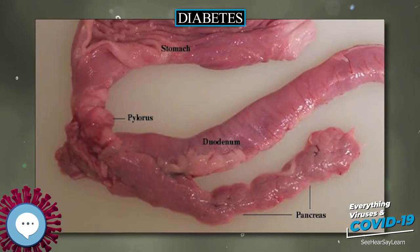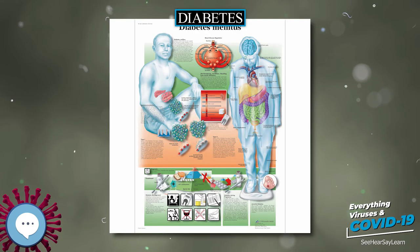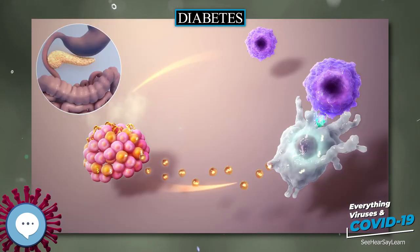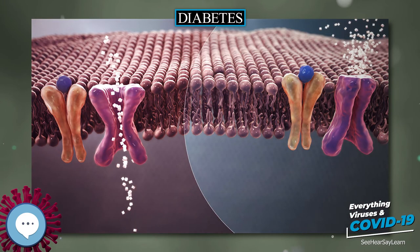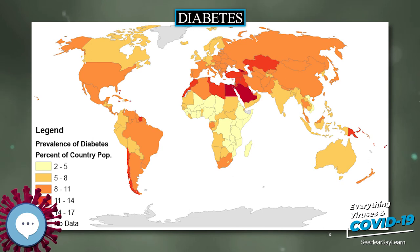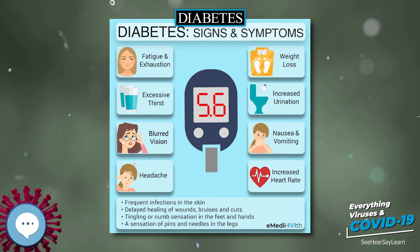No single dietary pattern is best for all people with diabetes. Healthy dietary patterns, such as the Mediterranean diet, low-carbohydrate diet, or DASH diet are often recommended, although evidence does not support one over the others. According to the ADA, reducing overall carbohydrate intake for individuals with diabetes has demonstrated the most evidence for improving glycemia, and for individuals with type 2 diabetes who cannot meet glycemic targets, low or very low carbohydrate diets are a viable approach. For overweight people with type 2 diabetes, any diet that achieves weight loss is effective.